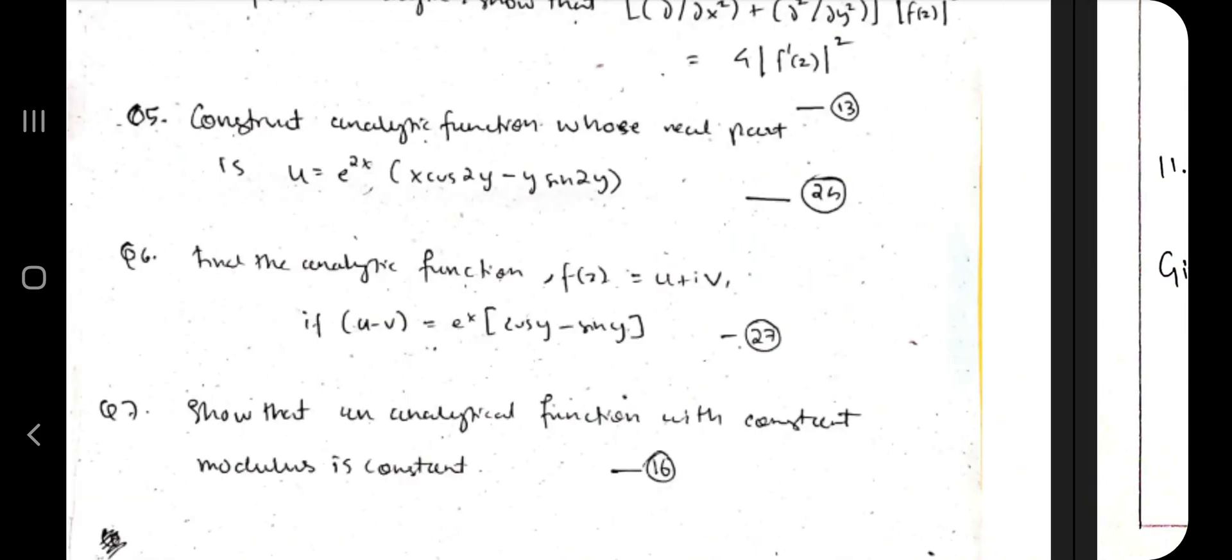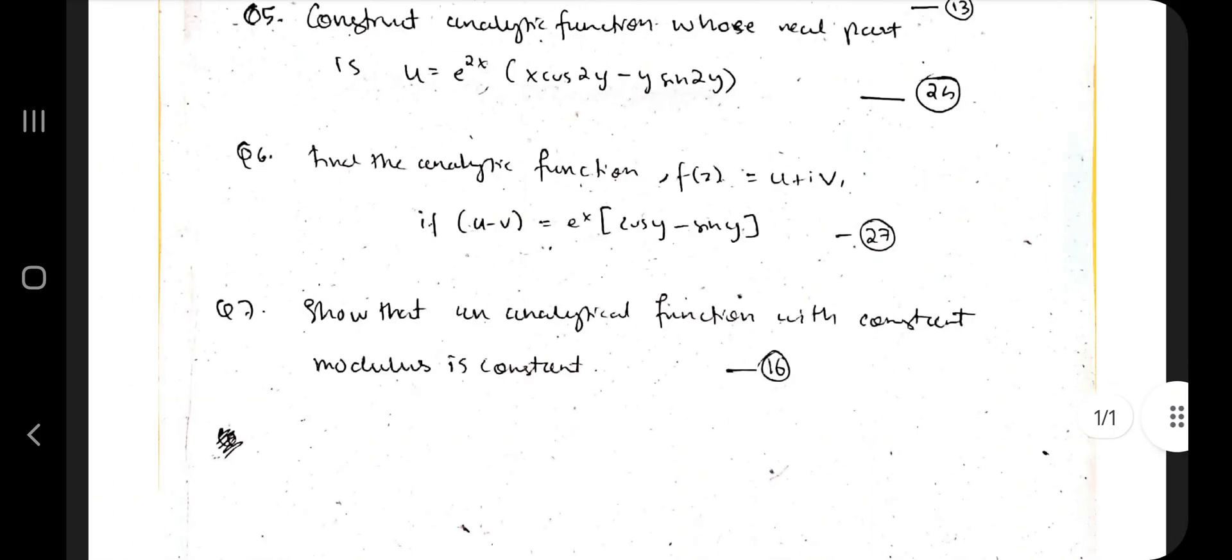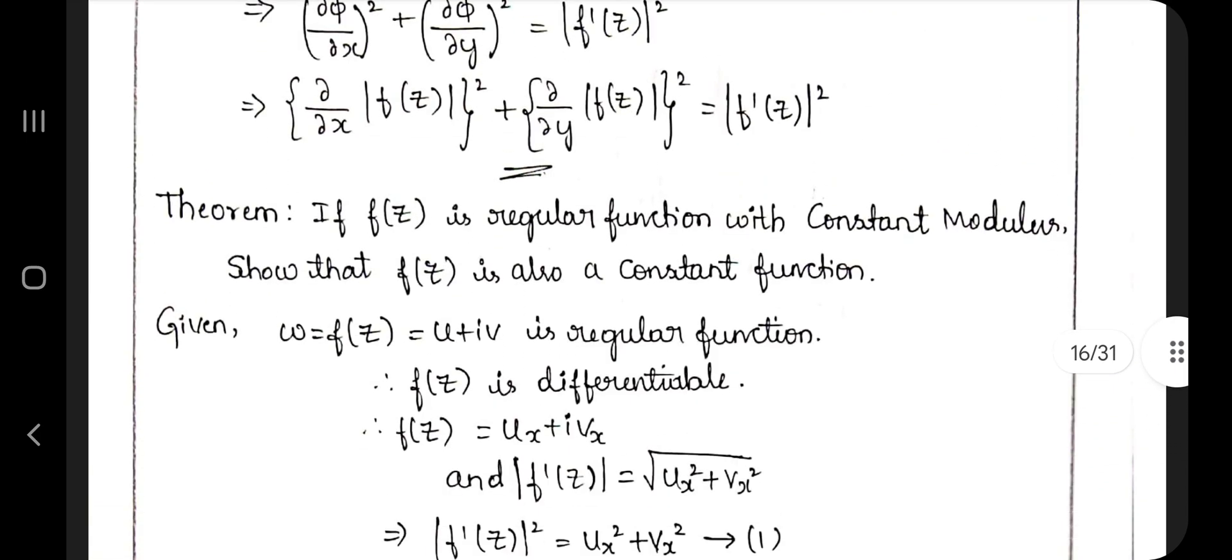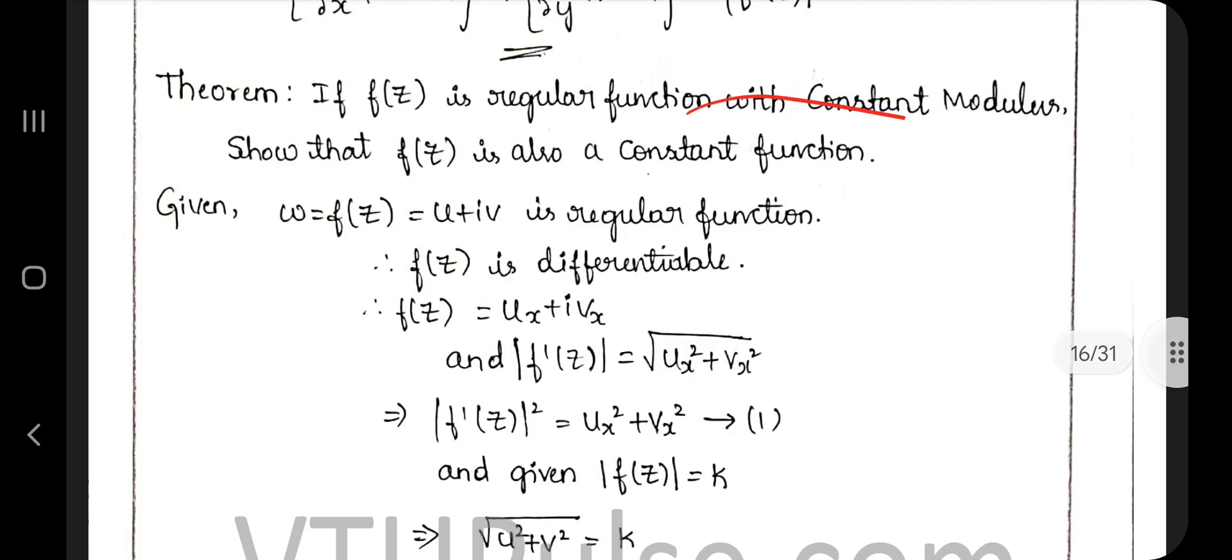Coming to this question, which is show that an analytical function with constant modulus is constant. Very important proof, it's on page number 16. Here we have the proof for this one, this is the theorem and this is the proof.